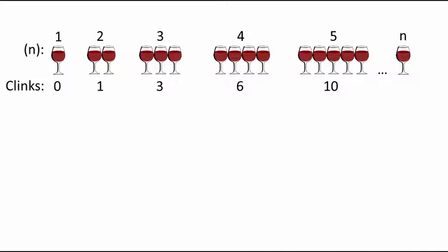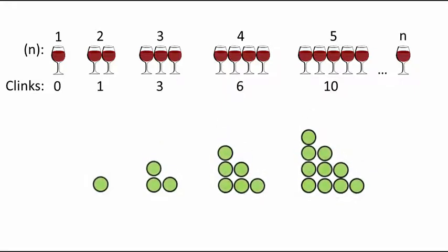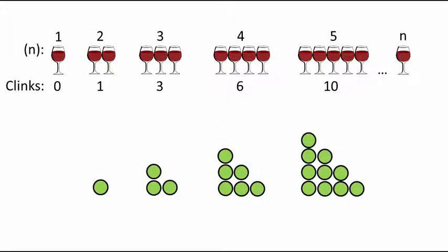Now, you may have already noticed that the numbers 1, 3, 6, 10 etc are the triangle sequence. It will help if we represent these clinks in triangular dots, like this.